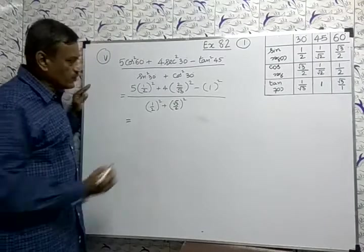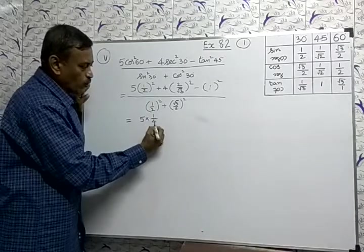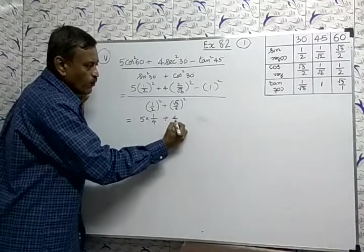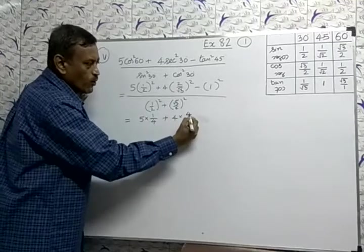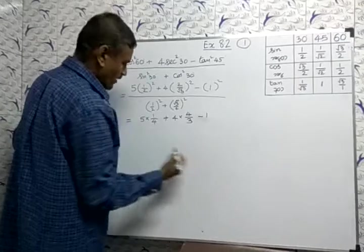Now, 5 into 1 square equal to 1, 2 square equal to 4, 4 into 2 square equal to 4, and root 3 square equal to 3, equal to 1, minus 1.